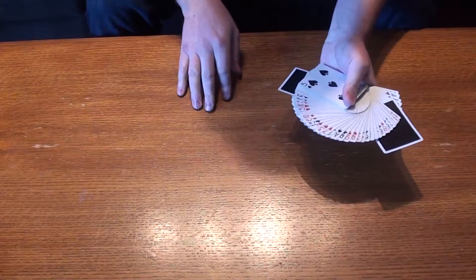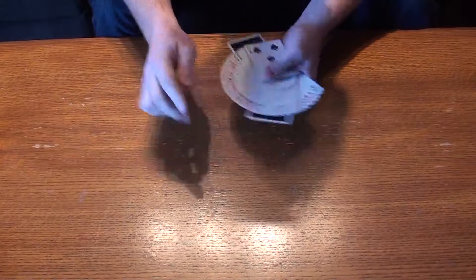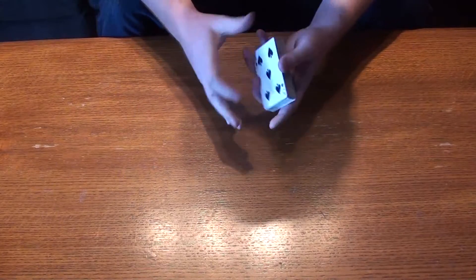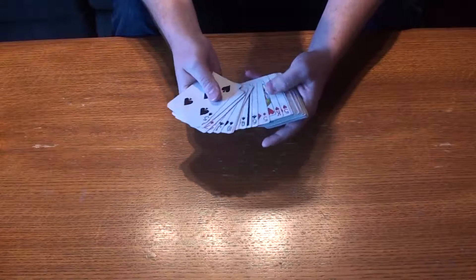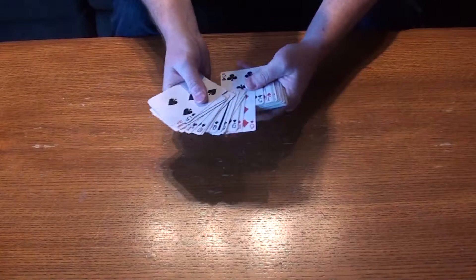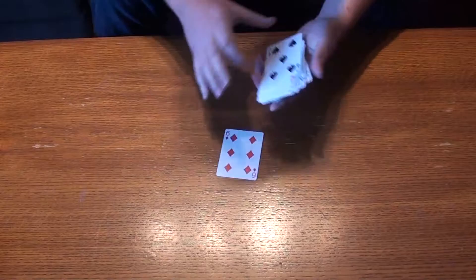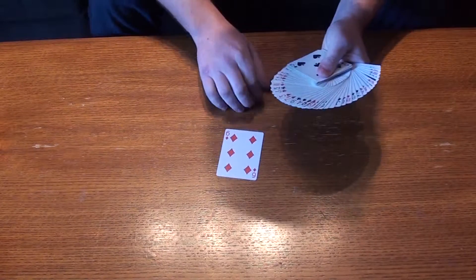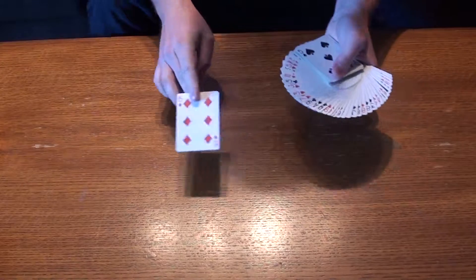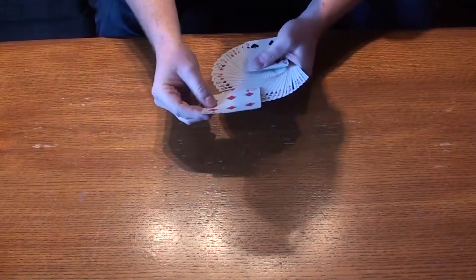In the meantime, you can choose any card. It really can be any card. Let's say the six of diamonds. The spectator can sign the six of diamonds, do whatever they want. It goes back into the deck.